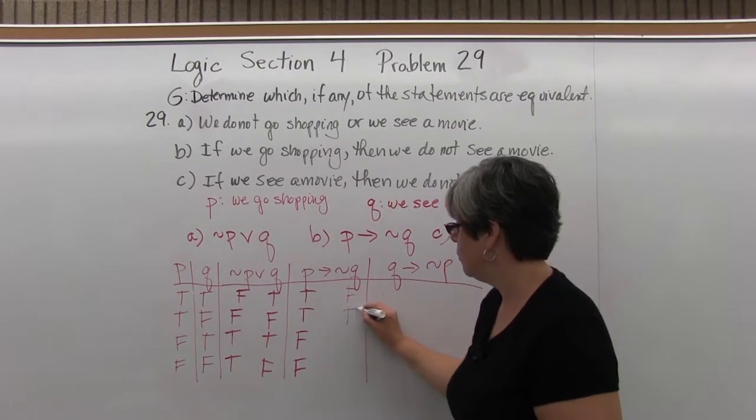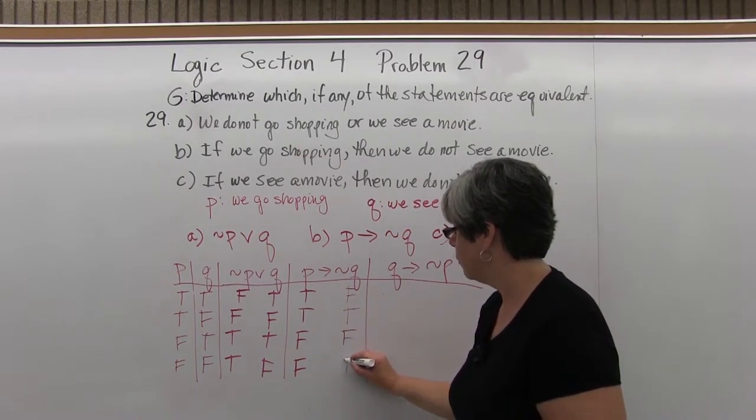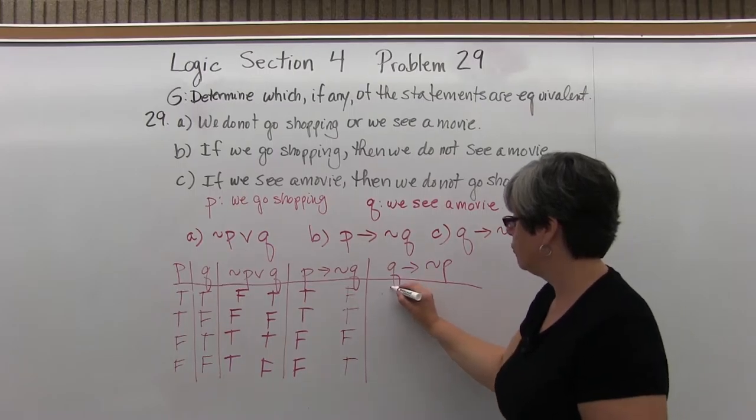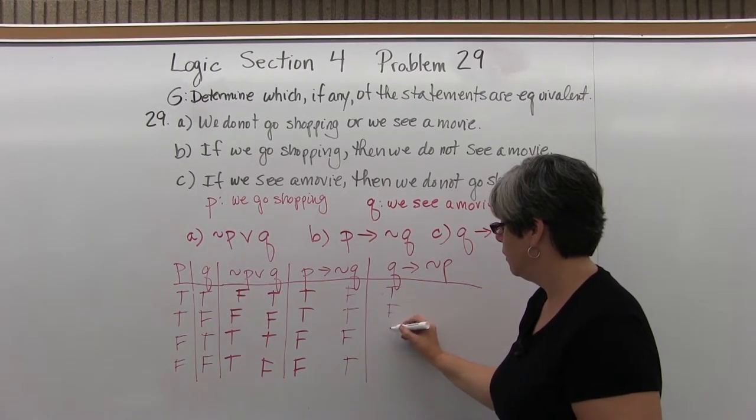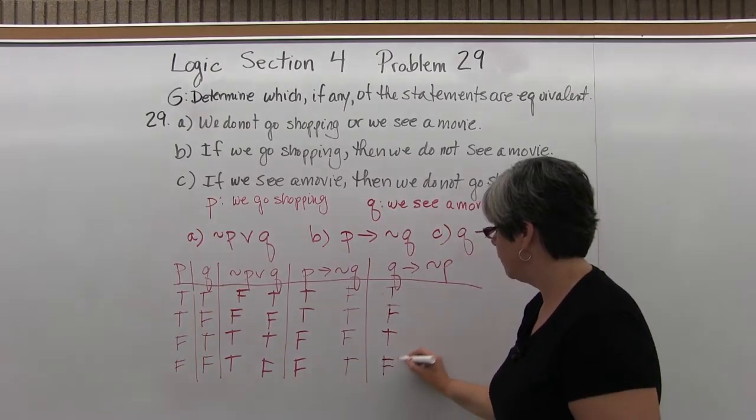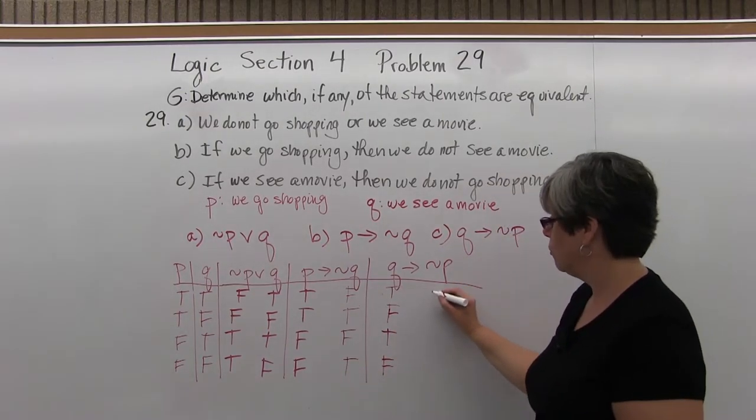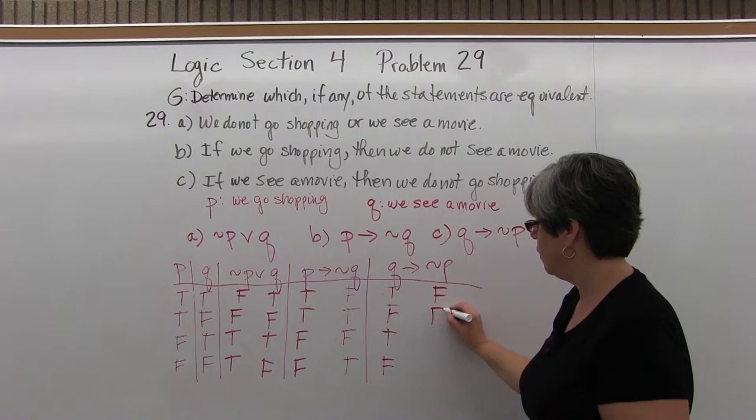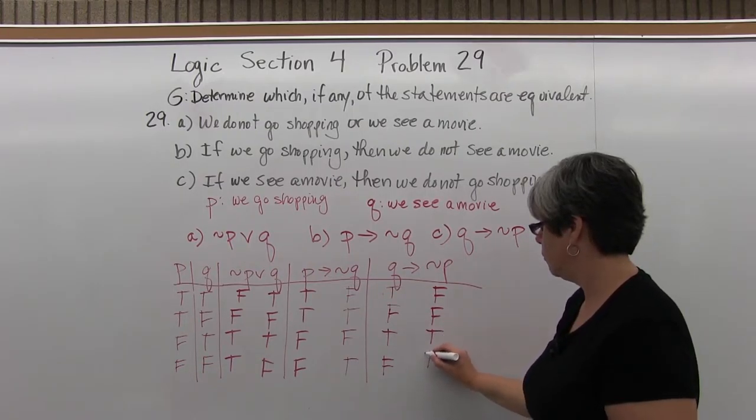Not Q will be false, true, false, true. Q: true, false, false, true, false. And not P will be false, false, true, true.